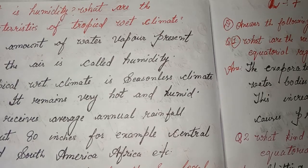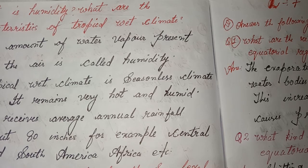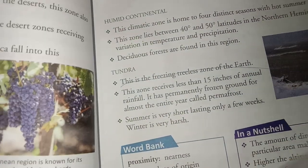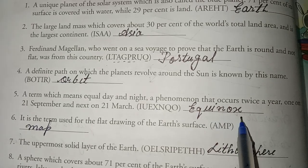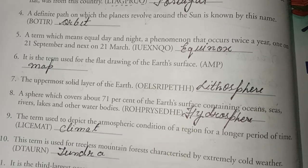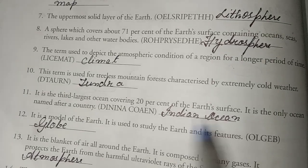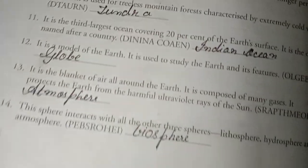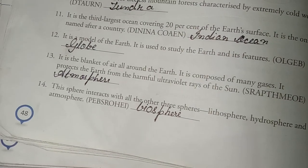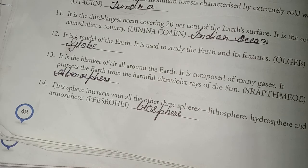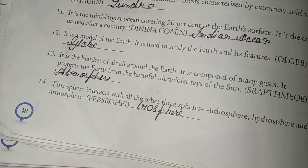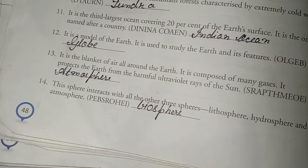I have done assignment one and think and answer for lesson six. After that I will solve extension sheet one — covering topics like earth, Asia, Portugal, orbit, equinox, map, lithosphere, hydrosphere, climate, tundra, Indian Ocean, globe, atmosphere, and biosphere. I have done all questions from chapter six, assignment one for lessons one to six, and the extension sheet. If you like my videos, please like, share, and subscribe. Bye!